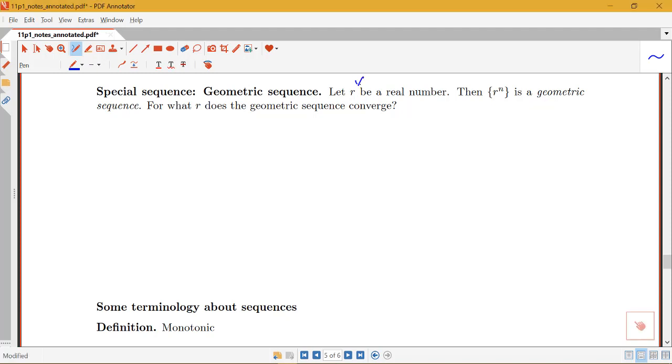So r here stands for ratio, and we're interested in the values of r for which this geometric sequence would converge. We're going to go through a couple of examples of some geometric sequences and think about whether they converge or diverge, and then we'll summarize for what values of r this type of sequence converges and what values it diverges for.